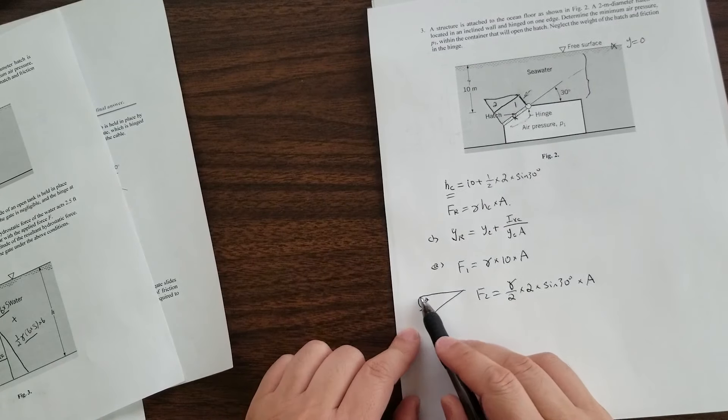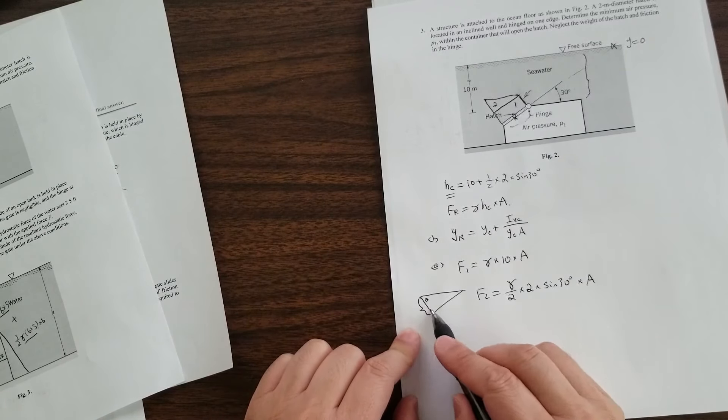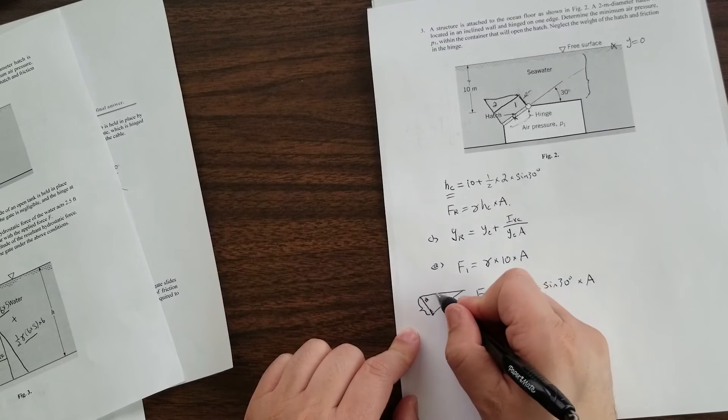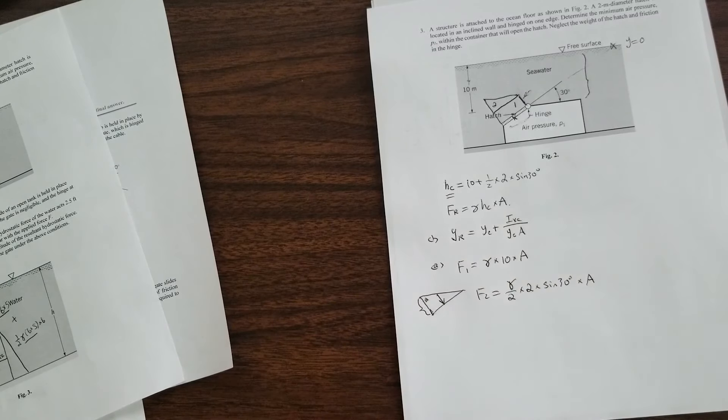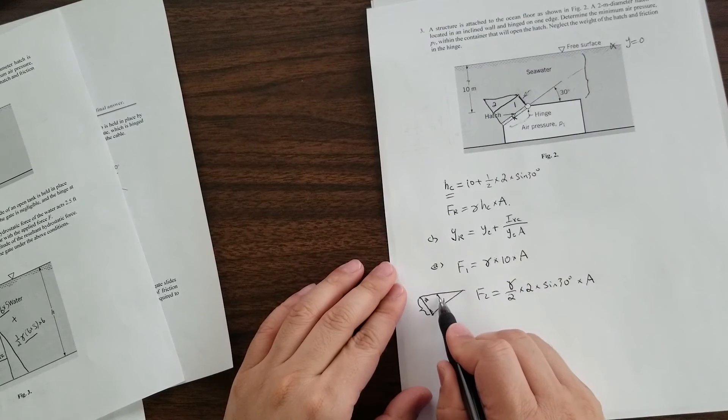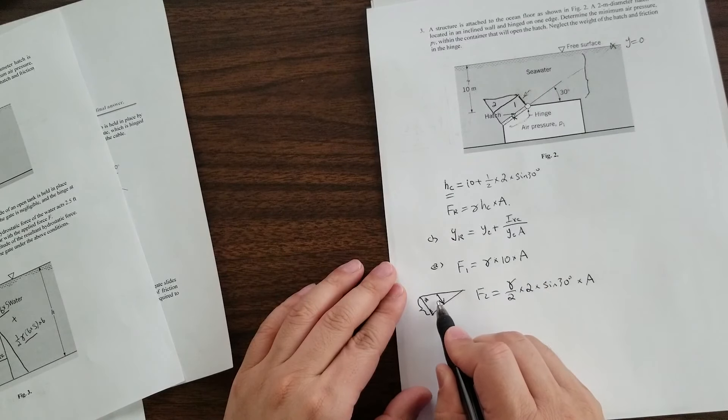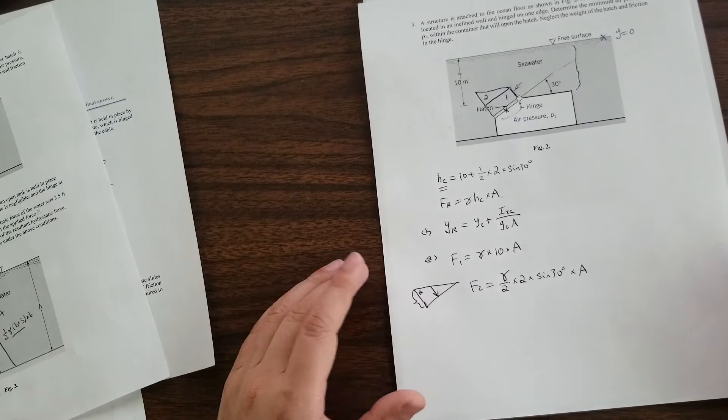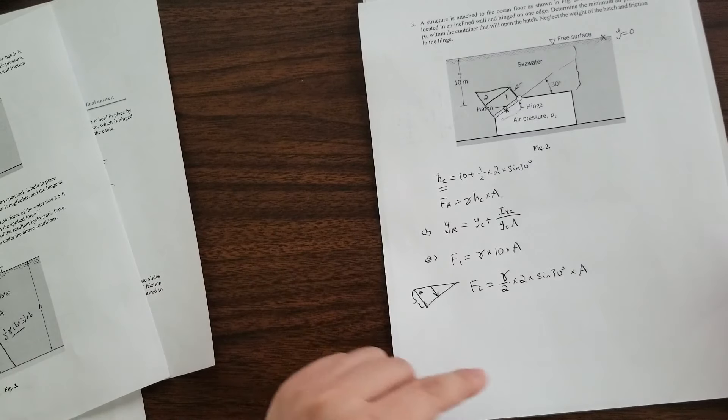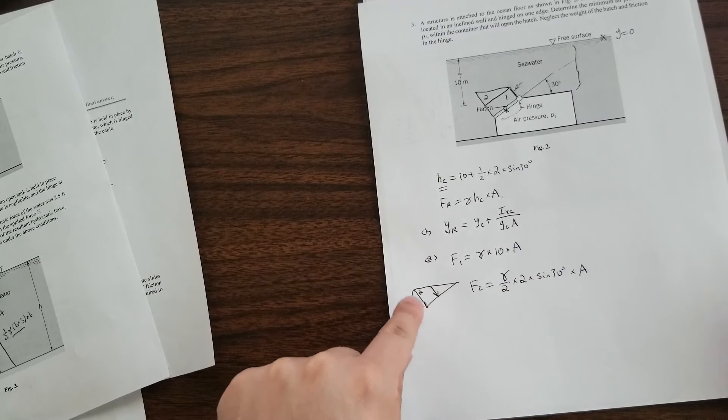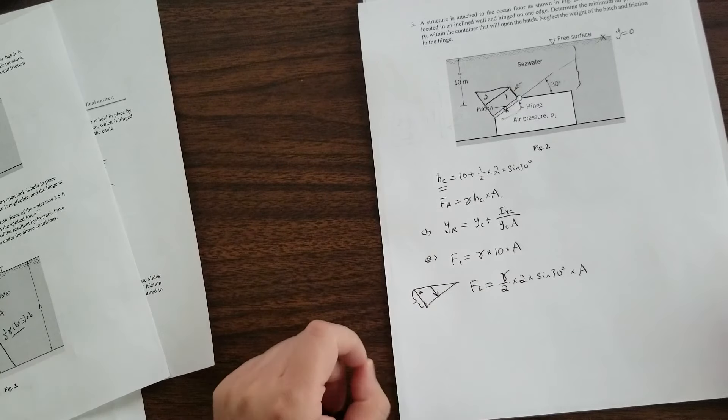So the maximum value, again, the maximum value is gamma two sine 30 degrees. So half of that is which is here. When we did the triangular pressure prism, we said it's this average pressure prism is half of the maximum value. This is not exactly what we talked about in class. And I think it's a good problem. So it reinforces this concept of how you do a pressure prism when it's inclined.